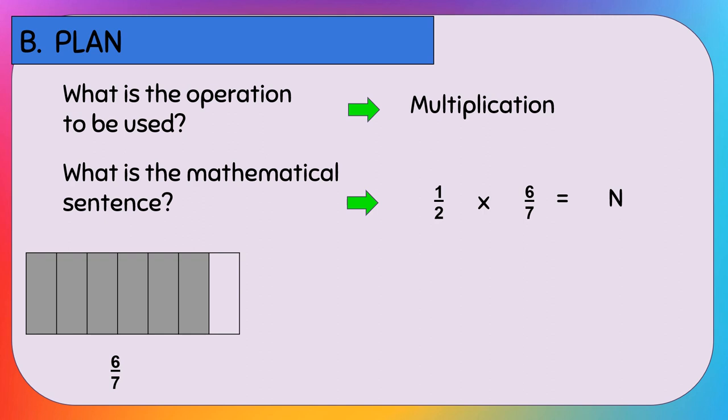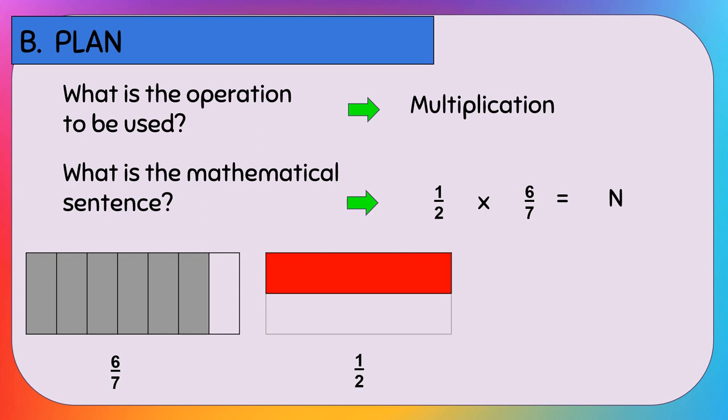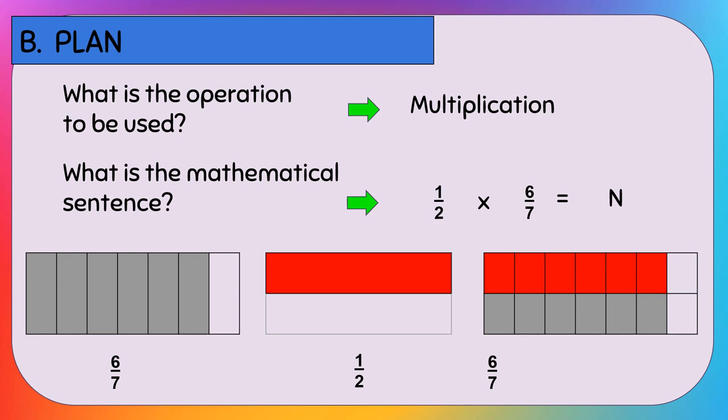In the module, using an illustration of 6/7, count the red parts — that's 6. Count all the equal parts — that's 14. So, one half of 6/7 is 6 out of 14 equal parts, which is reduced to 3/7 by dividing both by 2.